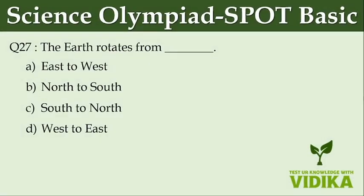The Earth rotates from dash. Option A: east to west. Option B: north to south. Option C: south to north. Option D: west to east.